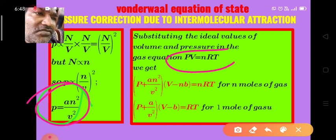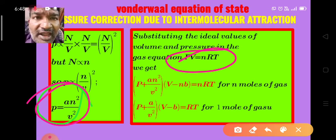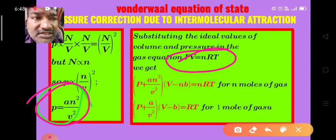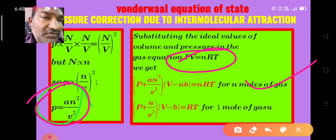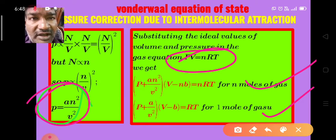Substituting both corrections into the ideal gas equation PV = nRT, we get the Van der Waals equation: (P + an²/V²)(V − nb) = nRT for n moles of gas. For one mole of gas, it becomes (P + a/V²)(V − b) = RT.